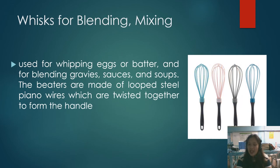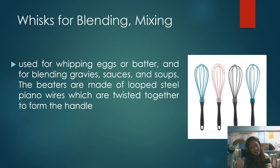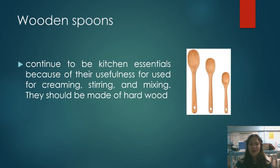The whisk is used for blending or mixing — whipping eggs or butter, and blending gravies, sauces, and soups. The beaters are made of looped steel piano wires twisted together to form the handle. Unlike the rotary egg beater which rotates on its own, with the whisk you manually rotate it yourself. Wooden spoons continue to be kitchen essentials because of their usefulness for creaming, stirring, and mixing. They should be made of hardwood.